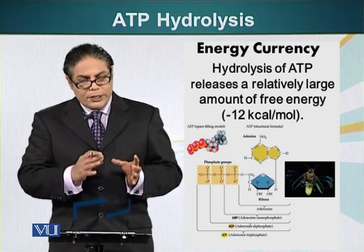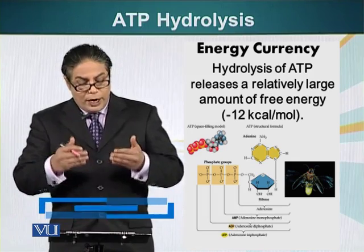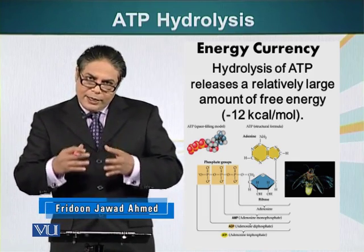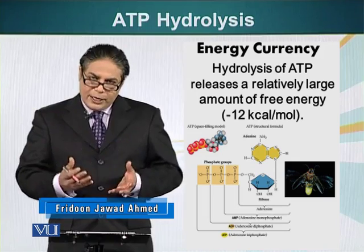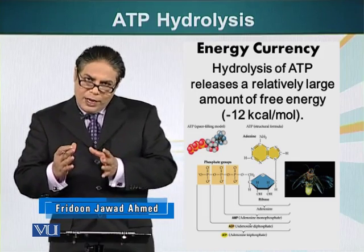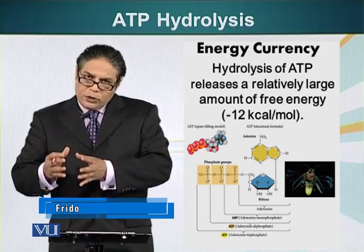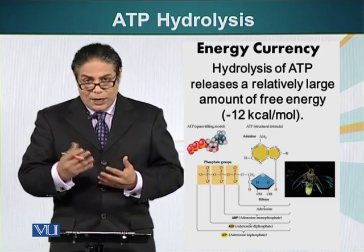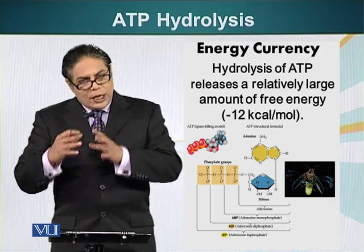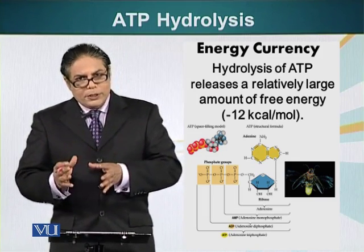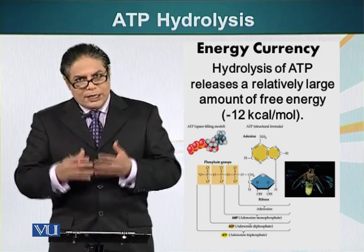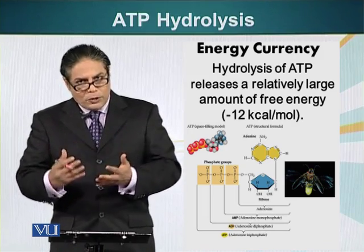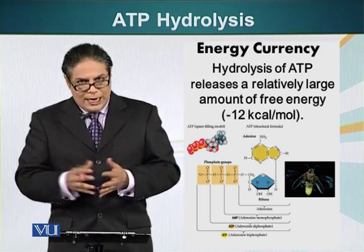For example, when we are linking monomers and creating polymers, we require energy because you are going from disorder to order. That is a process that requires energy. So cells have to compensate the processes that require energy by having some processes that release energy.